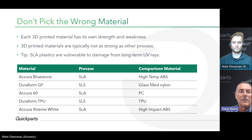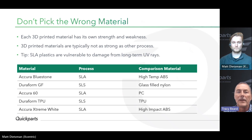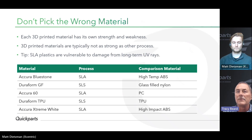The material process comparison chart lists several currently available materials: Accura Bluestone (high-temp ABS), Duraform GF (glass-filled nylon), Accura 60 (PC-like material), Duraform TPU (elastomer TPU), and Accura Extreme White (high-impact ABS). There are many more options available, including ABS-like, polycarbonate-like, polypropylene-like materials, nylons, elastomers, high-temp materials, biocompatible materials, composites, and clear transparent options — to meet whatever your requirements are. Feel free to reach out to our sales or facility professionals if you need additional advice on which materials best suit your needs.